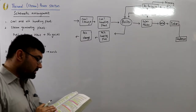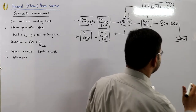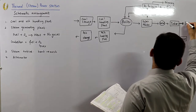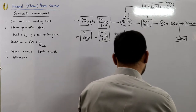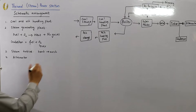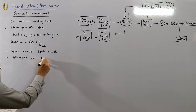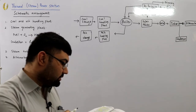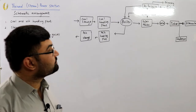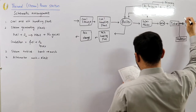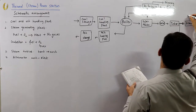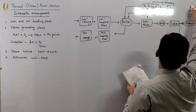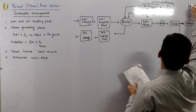Number four is the alternator. The steam turbine is mechanically coupled to an alternator, which is a generator. The alternator converts the mechanical energy into electrical energy. The electrical output of the alternator is delivered to the bus bars through a transformer, circuit breaker, and isolator.